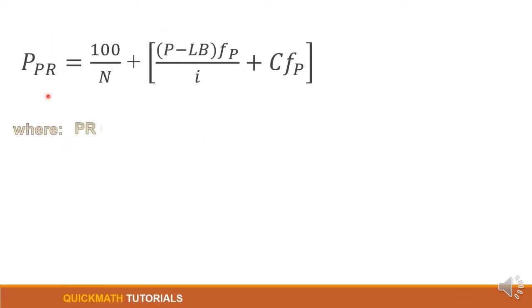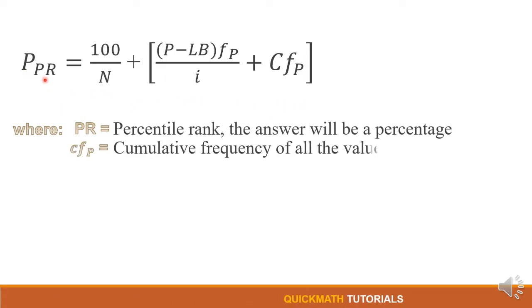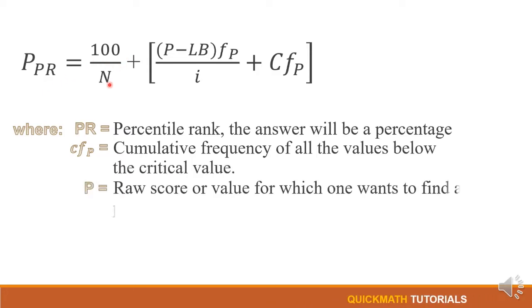So this will be the formula for the percentile rank. We have P sub PR which is equal to 100 over N plus P minus LB times f sub B over i plus cf sub B.